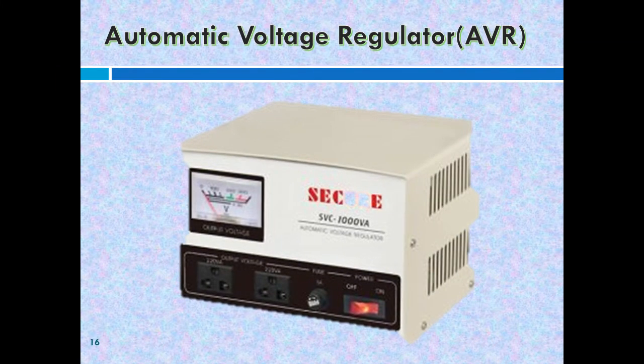You have seen the many ways how computers help us. But before you can start using the computer, you must first learn how to operate it properly. If it's your first time to use a computer, it's best to ask your parents or teacher to stay beside you and guide you. Our computers are usually connected to the electric outlet by means of a device called an automatic voltage regulator or AVR. Switch on the AVR to bring power to your computer unit. AVR is usually used if you are using a desktop computer.